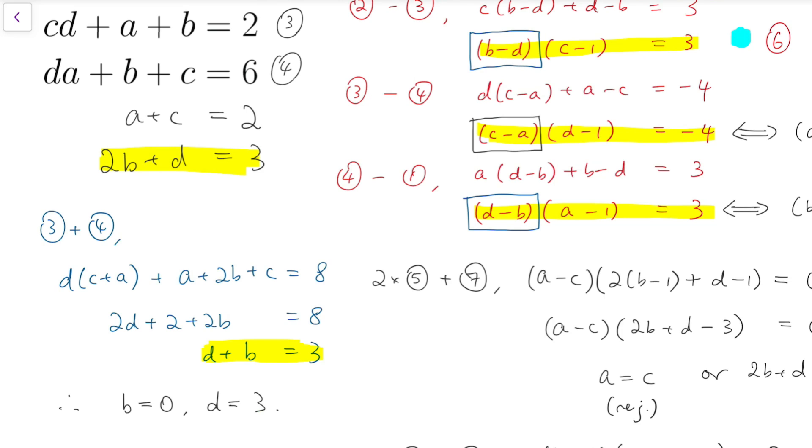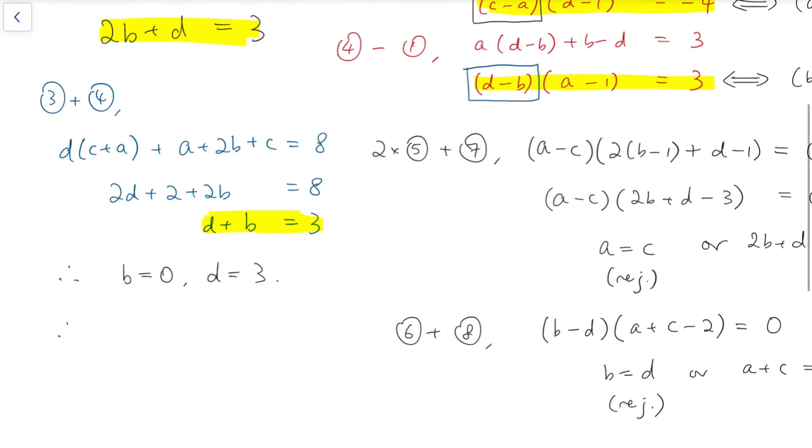Now from this, we can just put these numbers back into equations 3 and 4. And we also have a equals 2, c equals 0. And so this is our final solution.